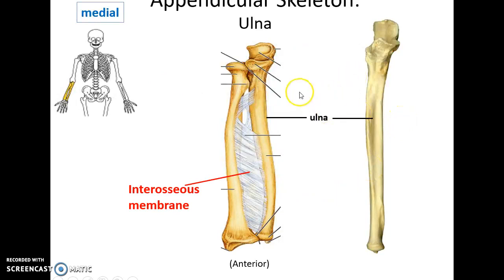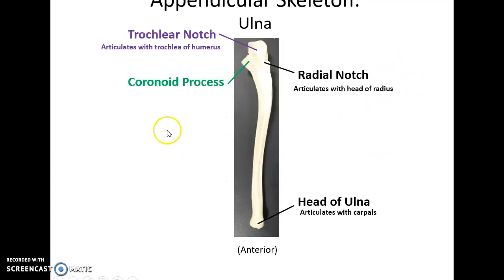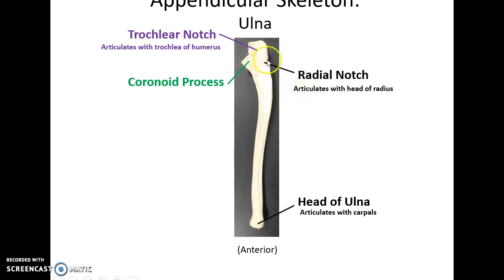Here's the forearm. We have the ulna, the medial bone, and the radius, the lateral bone. They are connected by the interosseous membrane. The ulna has this U-shaped proximal structure called the trochlear notch. The little lip that sticks out anteriorly is the coronoid process. There's also a rounded depression called the radial notch. And then down at the distal end, this smooth rounded area is the head of the ulna.